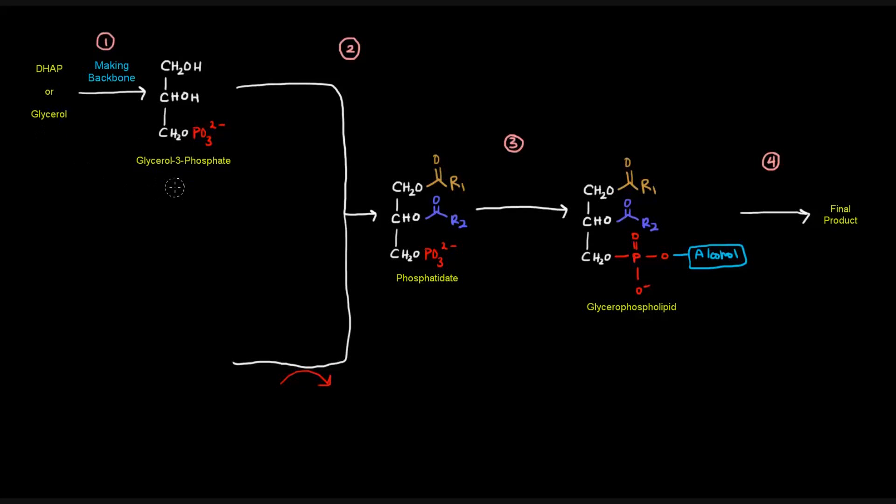Once we have glycerol 3-phosphate, we want to take that to form phosphatidate. How did we do that when we made triglycerides? Well, we just had acyltransferases basically add acyl groups. And that's what happens here as well. We take acyltransferases to make those ester linkages to those acyl groups. Then we have phosphatidate. That's the common precursor.